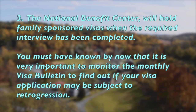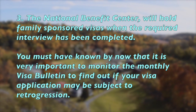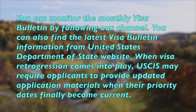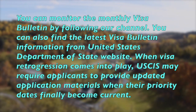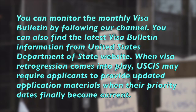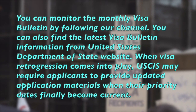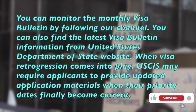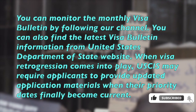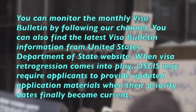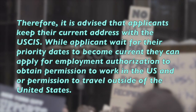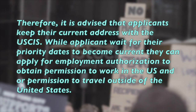You must know by now that it is very important to monitor the monthly Visa Bulletin to find out if your visa application may be subject to retrogression. You can monitor the monthly Visa Bulletin by following our channel, or you can find the latest Visa Bulletin information from the United States Department of State website. When visa retrogression comes into play, USCIS may require applicants to provide updated application materials when their priority dates finally become current.